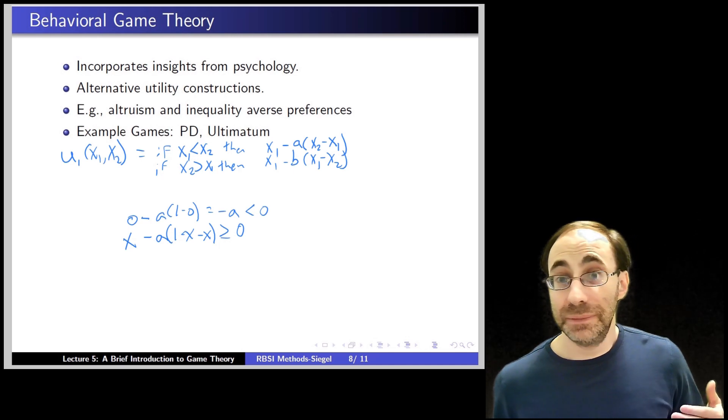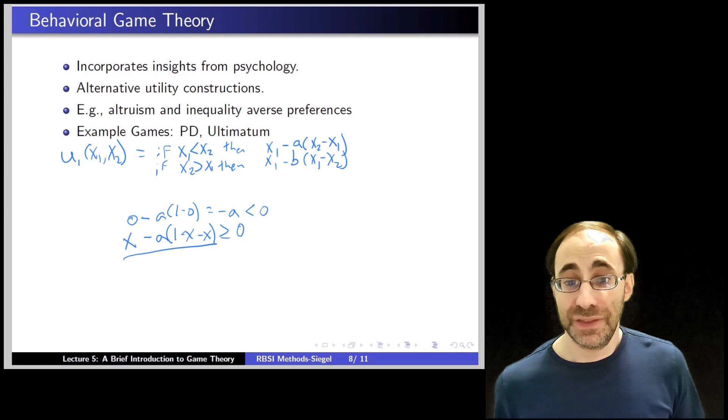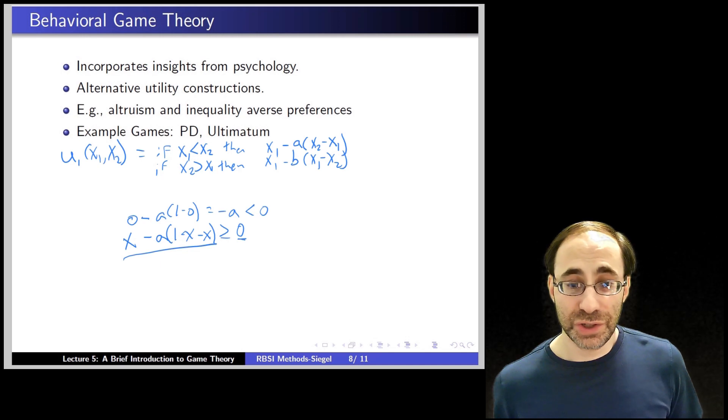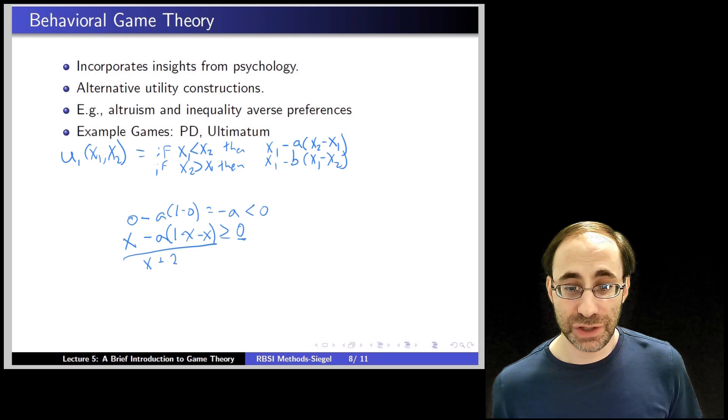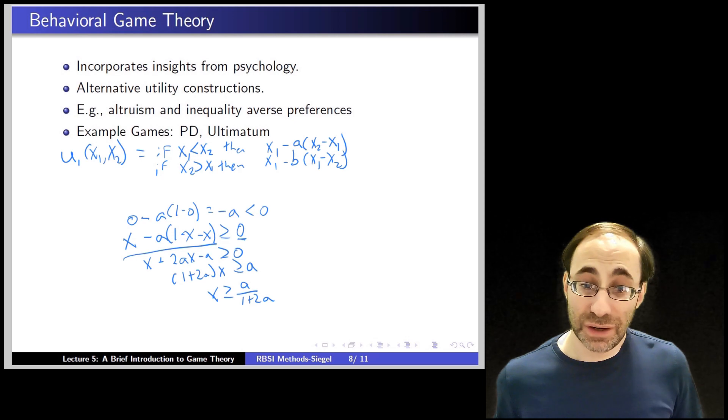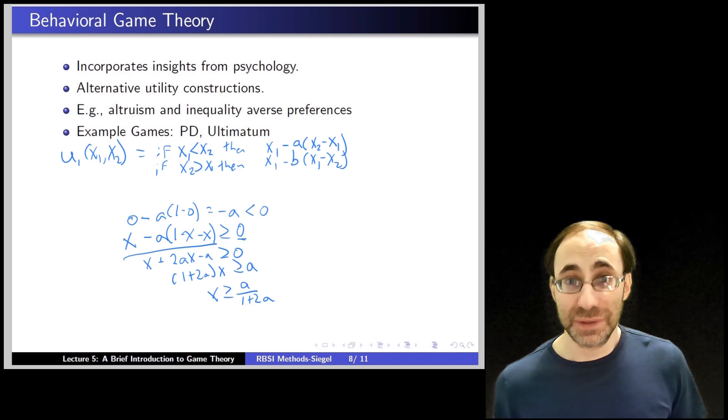The utility you get is actually zero because the difference upon rejection is zero minus zero, which is just zero. So this is the utility you get if you accept their offer of x. This is the utility you get if you reject because you both get zero. When is this true? It's true when x minus a(1 minus x - x) is bigger than zero, or (1 plus 2a) times x is bigger than a, or finally x is bigger than a over (1 plus 2a). So as long as x is bigger than a over (1 plus 2a), you will accept their offer.